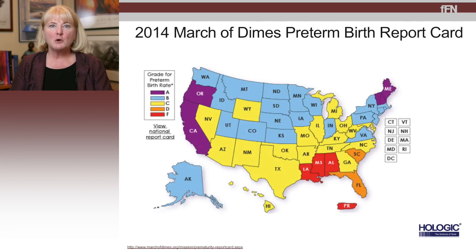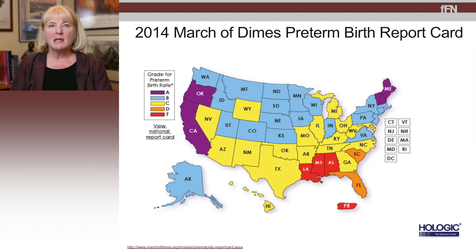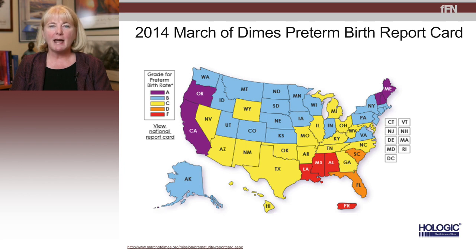We all know the March of Dimes and the very important work that they're doing to help us decrease the incidence of preterm birth in our country. Every year the March of Dimes develops a report card for every state based on their preterm birth rate. You can see in this visual of our country that some states continue to have a significant challenge with managing their preterm birth rate.